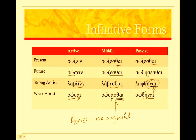So practice forming these with a couple of verbs, and you should have no problem identifying them. When you use them, you're primarily going to see the future after verbs like elpizō, 'to hope,' or mellō, 'to be about to.' But you'll also see all of these tenses in indirect discourse. Remember that indirect speech — the accusative plus the infinitive — will give you that indirect speech construction. And there we can use the aorist, the future, and the present to express tense to some extent.